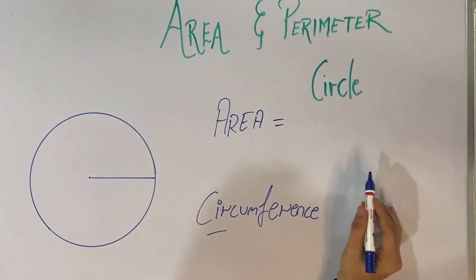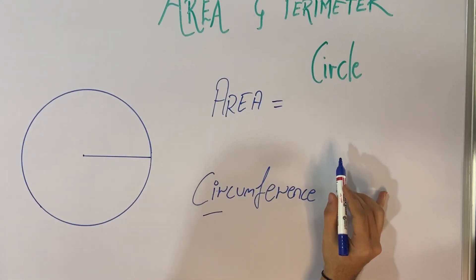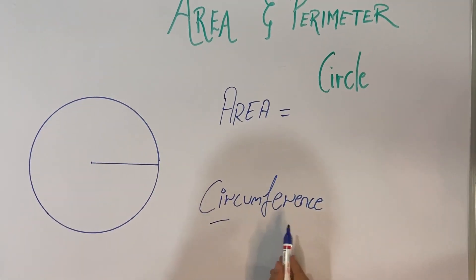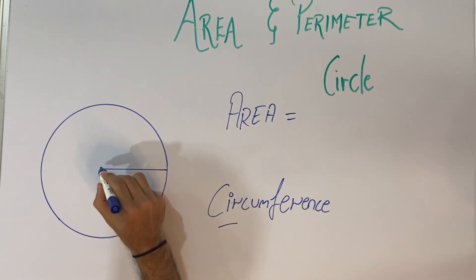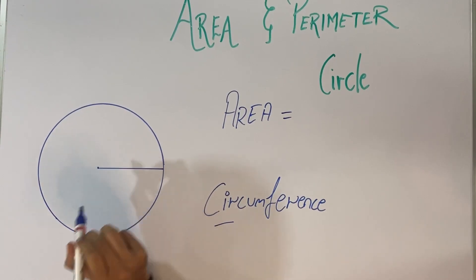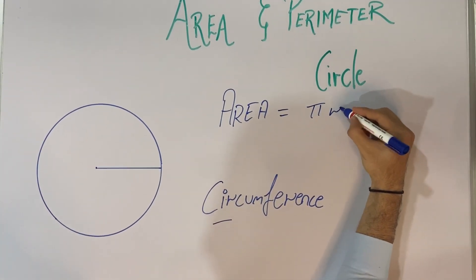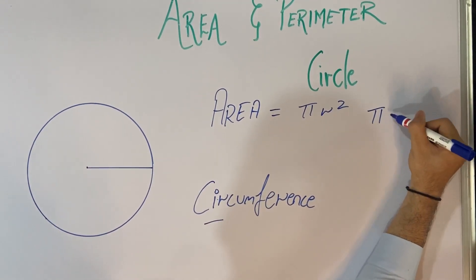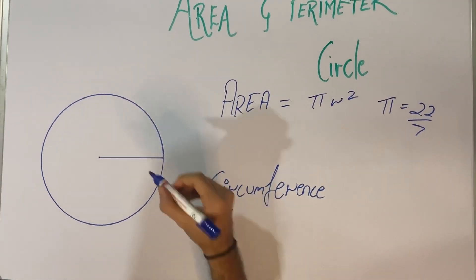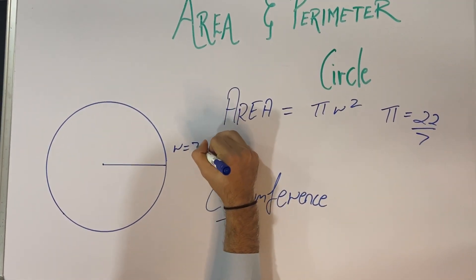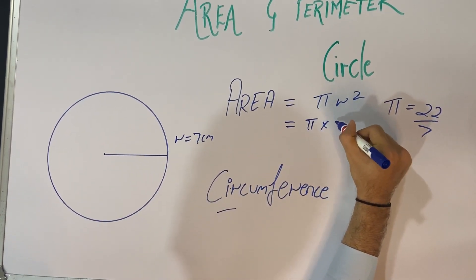Now let's find the area and circumference of a circle. In a circle there are no sides, so that is why we take it as circumference. This is the radius and this is the midpoint. The diameter is twice the radius. The formula of area is pi r square. The value of pi is 22 upon 7. Let's take r as 7 centimeter.